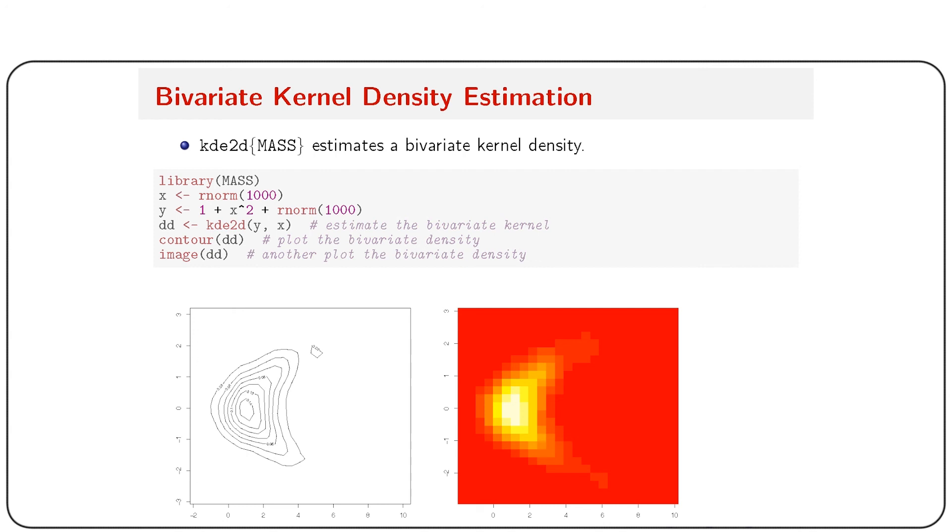In this module we have learned how to apply the Friedman rank sum test in R, how to generate the empirical distribution function, how to perform the Kolmogorov-Smirnov goodness-of-fit test, and how to generate density plots in R — covering both univariate and bivariate kernel density estimation.